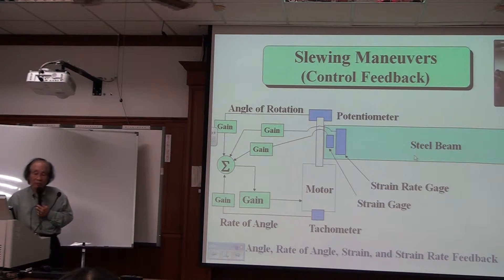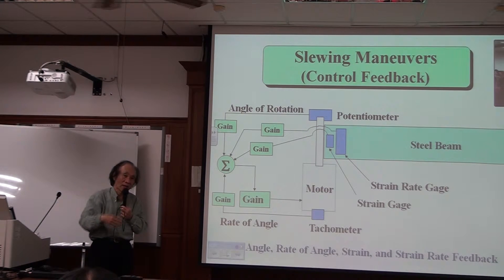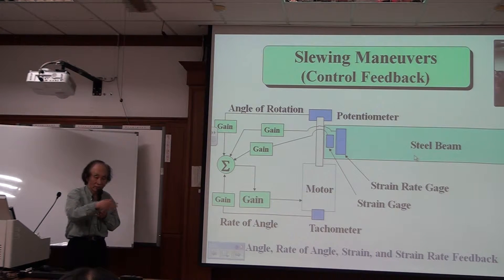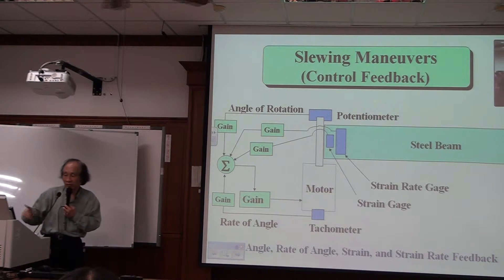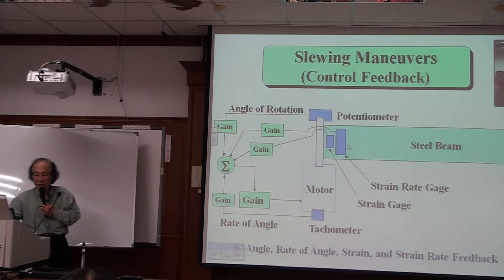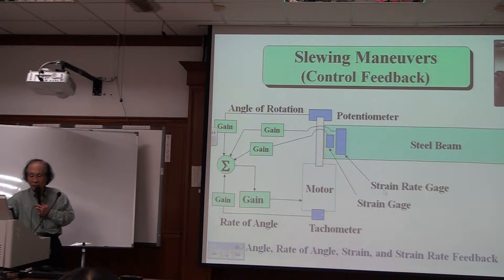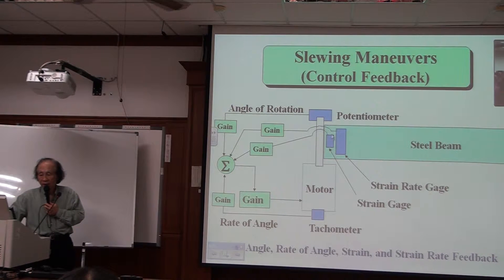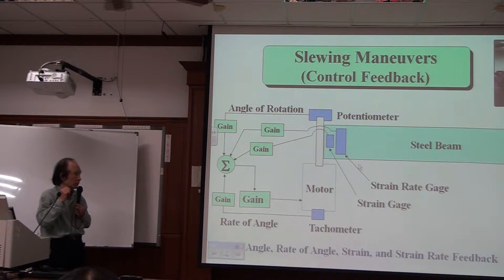This is one type of design. You can see there's a steel beam—a flexible beam just like a fishing pole. It's very flexible. Now in this beam, I'll show you the real system; this is just a sketch. In this one here, you can see that on the root of the steel beam, there's a strain gauge and a strain rate gauge.